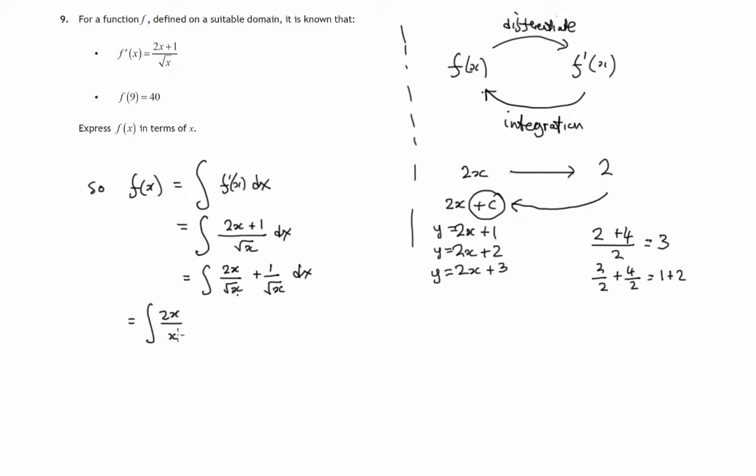Root x can be written as x to the half, so we've got 2x divided by x to the half. When you divide indices, x to the 1 divided by x to the half, you subtract the indices. We'll get 2x to the half, and we'll get x to the negative half. Now we can integrate this.